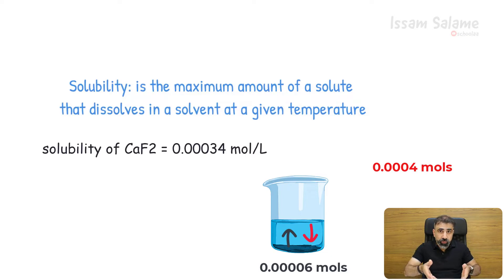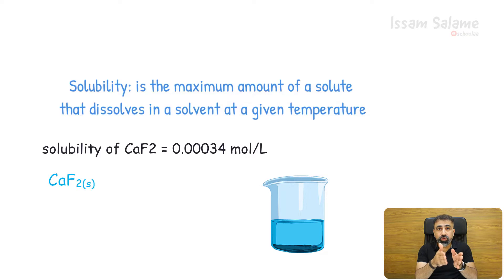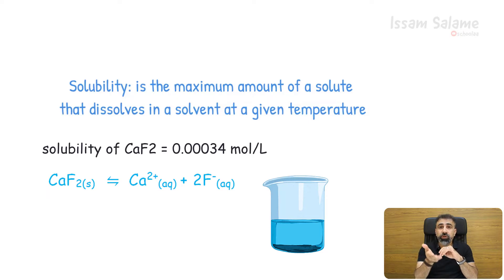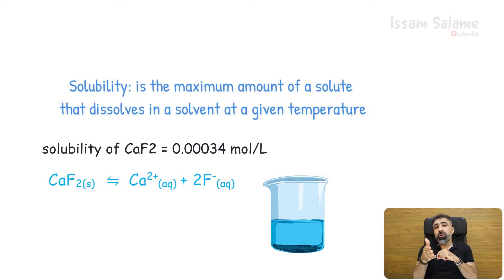The calcium fluoride solid at the bottom will dissociate and some of the ions will combine again to form solid. The chemical equation for this equilibrium is: calcium fluoride solid dissociates into calcium ions and fluoride ions. To write the equilibrium constant, we use the concentration of products divided by the concentration of reactants, neglecting solid and liquid substances. I will keep a link in the description to show how to write the equilibrium constant.